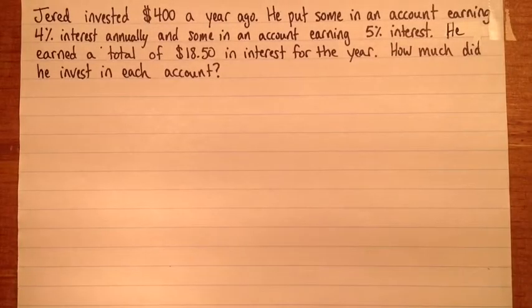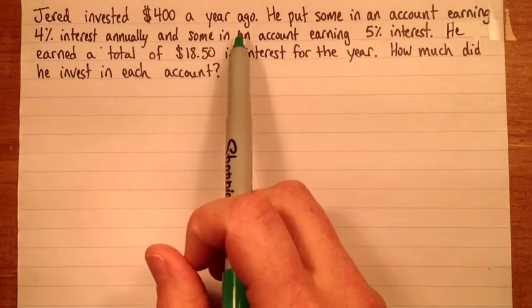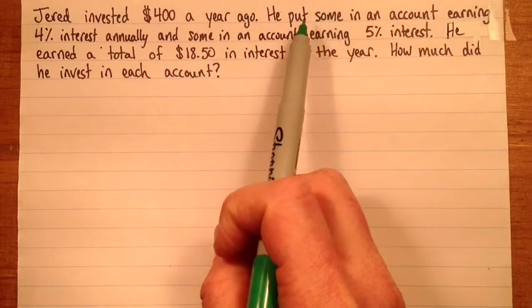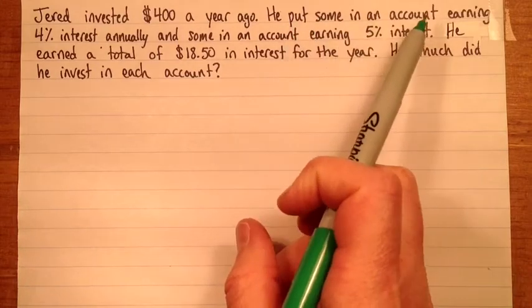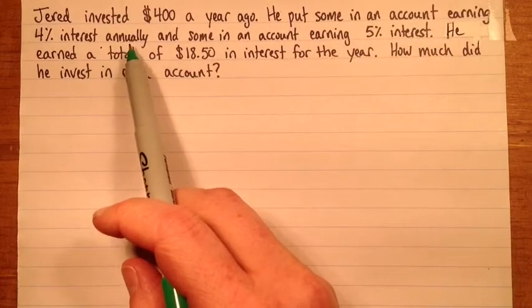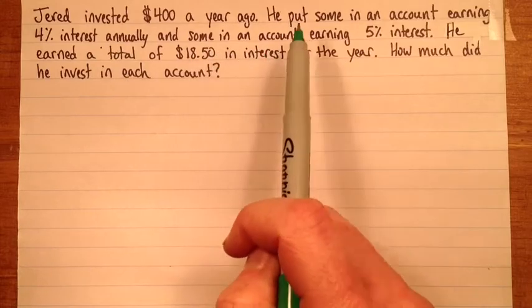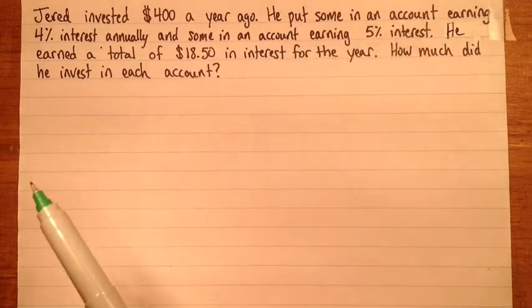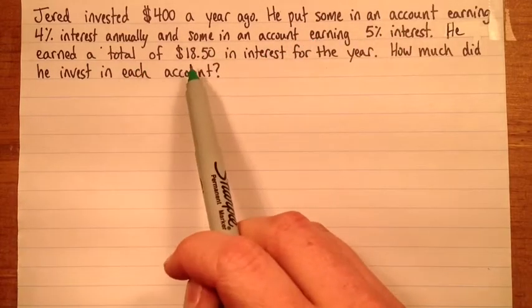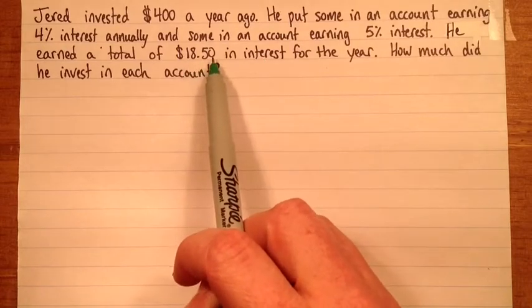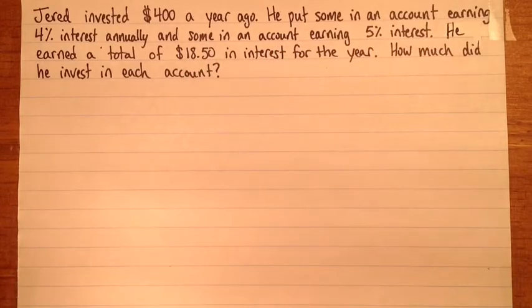Okay, so here we have a problem involving investing money. Jared invested $400 a year ago, and he put it in two different places. He put some of it in an account earning 4% interest annually, and he put the rest of it in another account which earned 5% interest. Altogether, for the year, he earned a total of $18.50 in interest. So the question is, how much did he invest in each account?